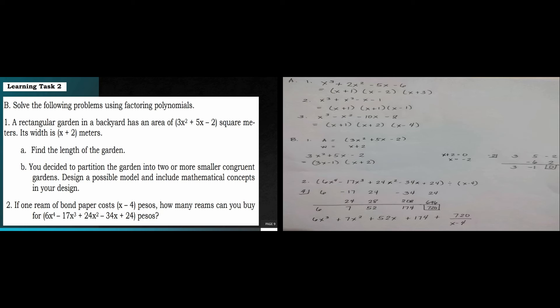For number 2, using synthetic division with divisor 4, we have coefficients 6, negative 17, 24, negative 34, and 24. Bring down 6. 6 times 4 is 24, minus 17 is 7. 7 times 4 is 28, plus 24 is 52. 52 times 4 is 208, minus 34 is 174. 174 times 4 is 696, plus 24 is 720. So the result is 6x plus 7x plus 720 over x minus 4.